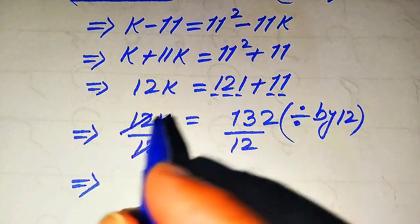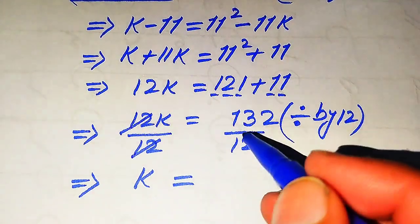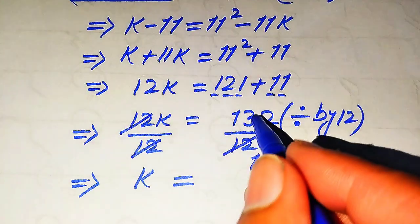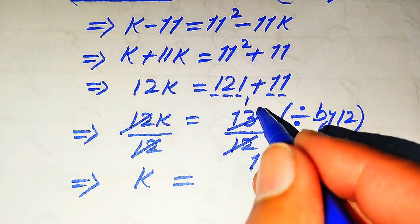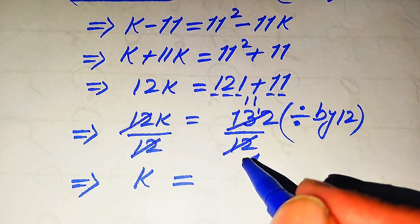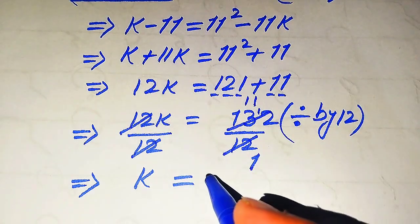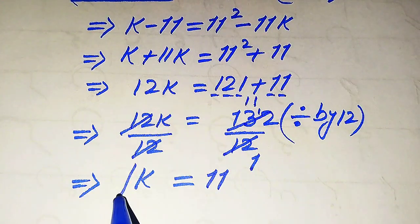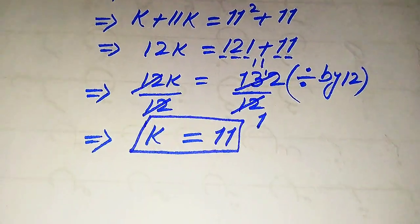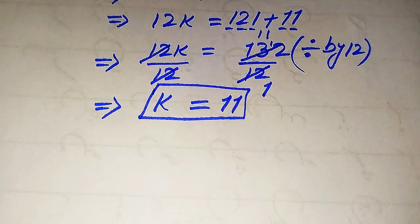After dividing both sides by 12, the 12 on the left cancels out. We compute 132 divided by 12: since 12 times 11 equals 132, we get k equals 11. So from the first method we obtain one root of the given equation: k equals 11.